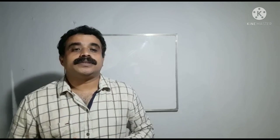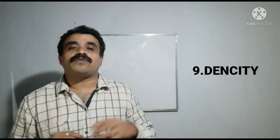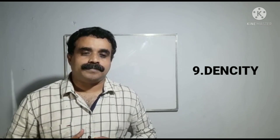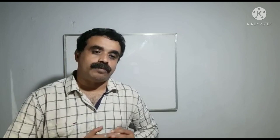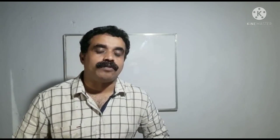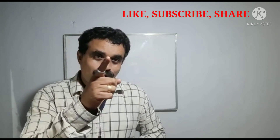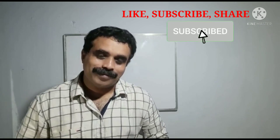Property number nine: density. Most of the metals have high density. So those are the nine physical properties of metals. In the next class, we will be studying the physical properties of non-metals. Until then, bye — don't forget to subscribe, like, and comment. Thank you.